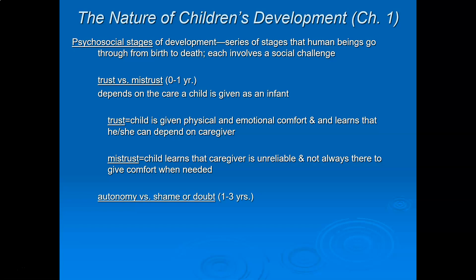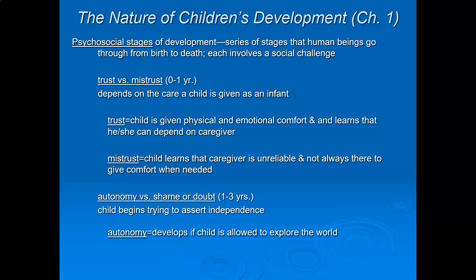The next psychosocial stage is Autonomy versus Shame or Doubt, from age one to three. Autonomy basically means independence. Erikson says the social challenge here is that children begin asserting their independence. You've all probably heard of the terrible twos — many kids at that age say no, they're resistant, they say 'let me do it myself.' Erikson would say this is a natural thing.